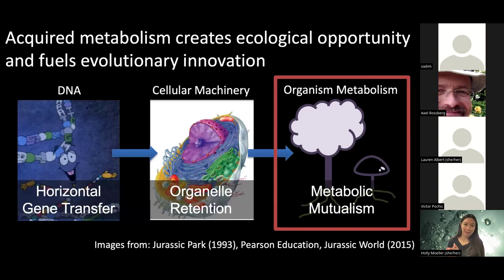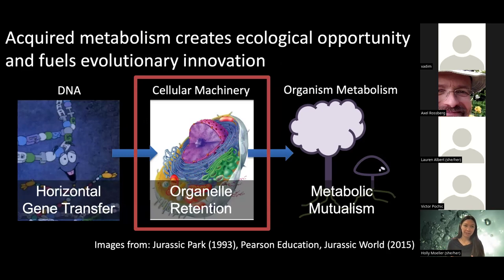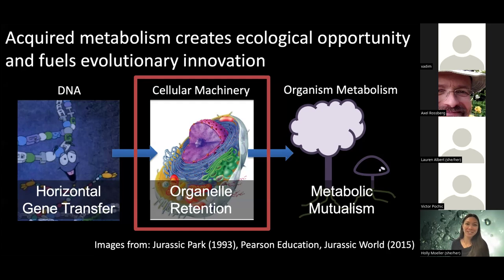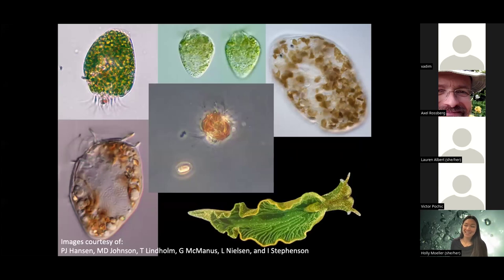Shifting to the subcellular level, one of the most fascinating examples is the movement of the chloroplast — the eukaryotic organelle for photosynthesis. While plants and algae acquired it long ago, there are actually many species alive today that eat photosynthetic organisms, retain those chloroplasts, and become transiently photosynthetic themselves. This is a profound example of acquired metabolism: transforming from a heterotroph to a primary producer through the acquisition of cellular machinery. Understanding these contemporary acquired phototrophs — kleptoplastic or chloroplast-stealing organisms — gives insight into the evolutionary process that gave rise to modern eukaryotic photosynthetic organisms.